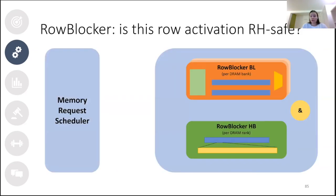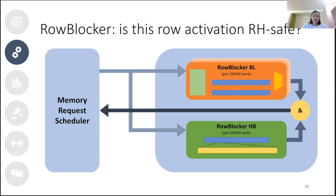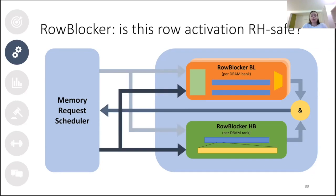RowBlocker checks whether a row activation is safe by combining both components. When the memory request scheduler receives a row activation request, RowBlocker checks if the row address has been blacklisted and if it is in the history buffer. If the row is both blacklisted (activated frequently) and found in the history buffer (activated recently), the scheduler blocks the row activation. Once the row becomes safe again after t_delay time has passed, the scheduler issues the row activation, inserting the row into both the history buffer and the bloom filters.